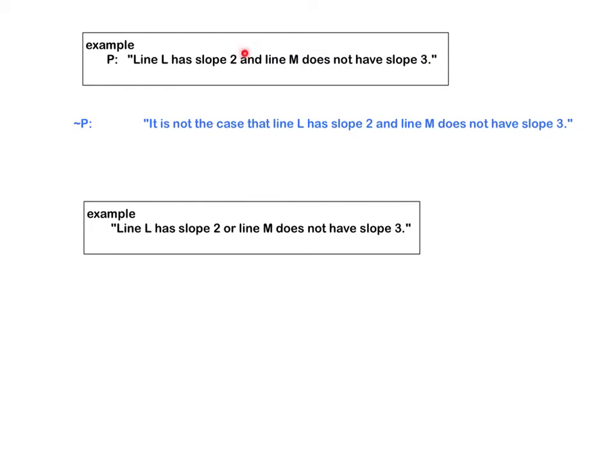But note that it's an and statement, so we can get a useful denial of it by using one of DeMorgan's laws as follows. Either line L does not have slope 2 or line M does have slope 3. So you see we've negated this part of the statement, this part of the statement, and we've changed the and into an or in order to get the useful denial.